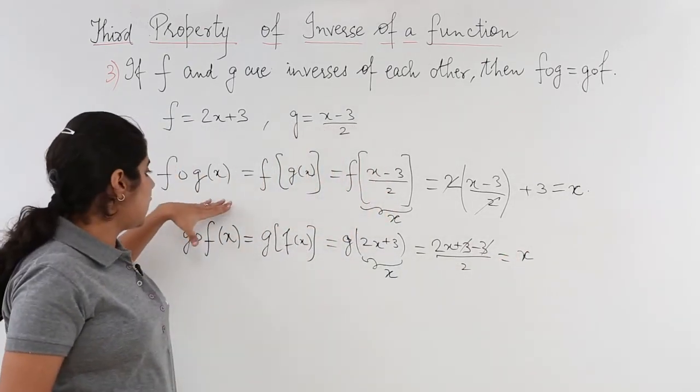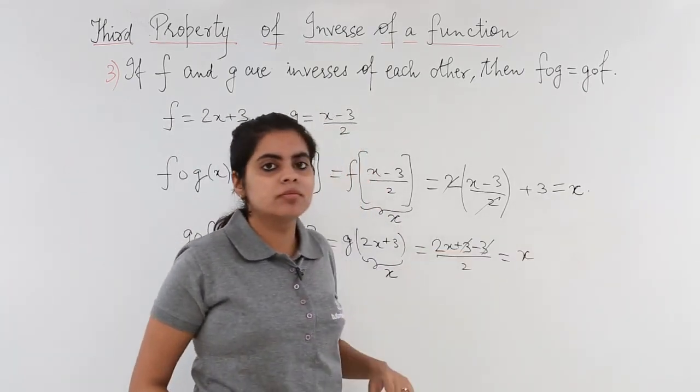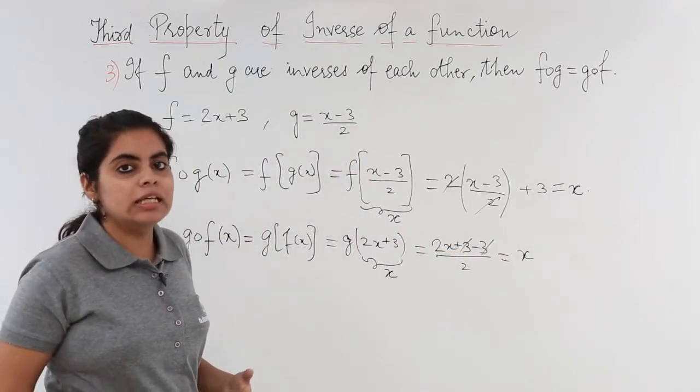What do we note? That fog and gof both have the same value, that is x. So it means what? It means that the theorem is being proved.